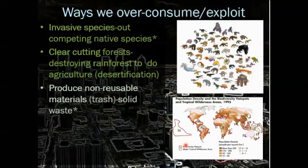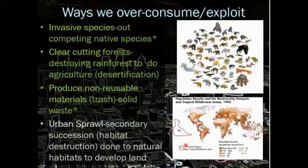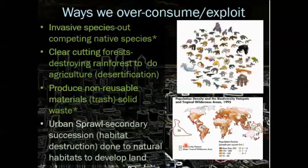We also produce non-reusable materials, particularly solid waste and trash. And urban sprawl — that's the expansion of cities into farther and farther outreaches into the wilderness, causing secondary succession and habitat destruction. It's done to natural habitats to develop land. The farther we move out in our city — Anthem is still expanding out — we continue to move into those areas and kill any plants or animals that are living there just so that we can have room to have a larger house with a pool and all of these things that maybe we don't really need.